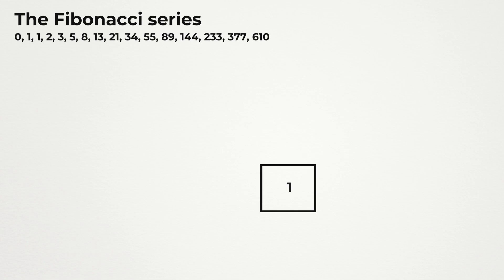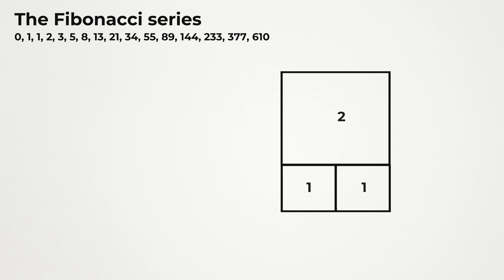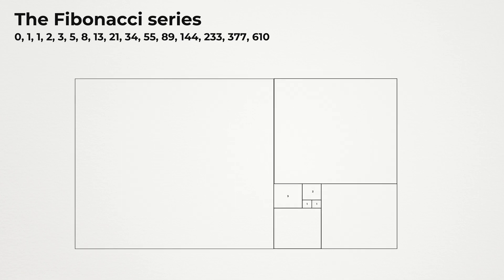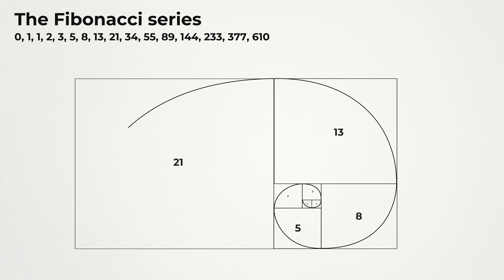To create a Golden Spiral using the Fibonacci series, start with squares whose side lengths match Fibonacci numbers. Begin with a square of side 1, then add another square of side 1 next to it, then a square of side 2 on top, followed by a square of side 3, and so on. Connect the corners of these squares with a smooth quarter-circle arc and you will see an outward growing spiral emerge. Now we know how to make these spirals both inwards and outwards.